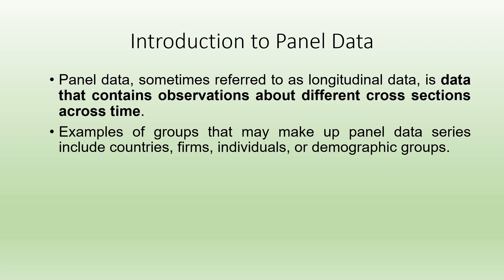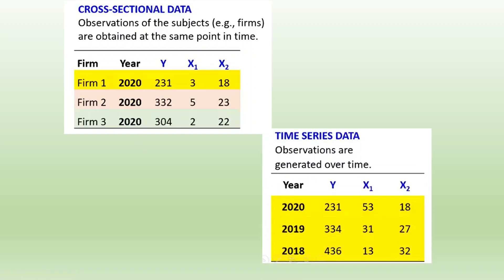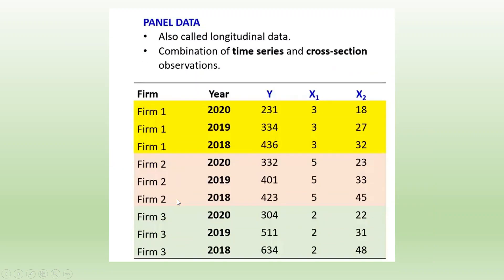In the next slide, I have given you an example of what I mean by cross-section data, time series data, and panel data. In case of cross-section data, observations of the subjects are obtained at the same point in time — form 1, form 2, form 3 at a constant time. In case of time series data, observations are generated over time, meaning one firm with observations collected at different time intervals — 2018, 2019, and 2020. But panel data is a combination of cross-section and time series data, also known as longitudinal data: different firms are included along with different time intervals.